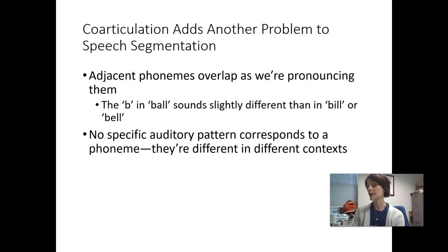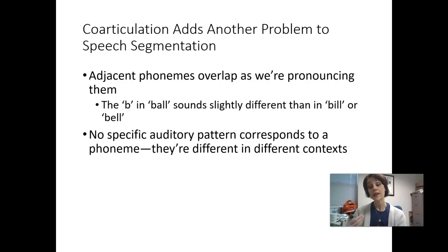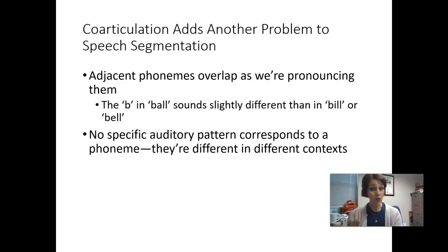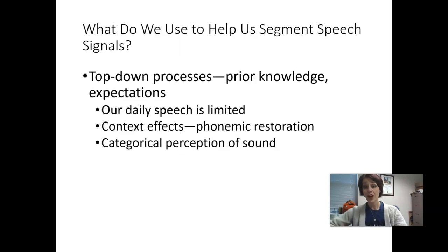Adjacent phonemes will overlap as we're pronouncing them — we call this phenomenon coarticulation. This means that the B in 'ball' actually sounds slightly different from the B in 'bill' and the B in 'bell,' because you are already in preparation for the next vowel sound. As a result, there is no specific auditory pattern that corresponds to a phoneme; they are going to be different in different contexts.